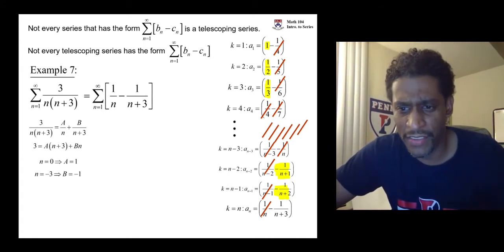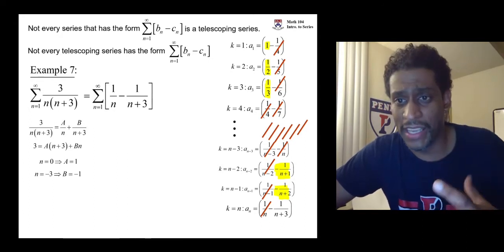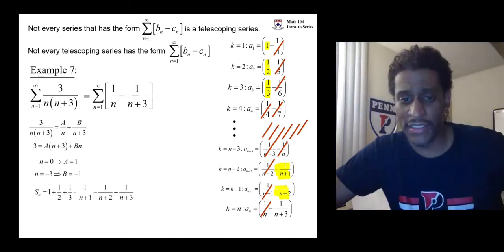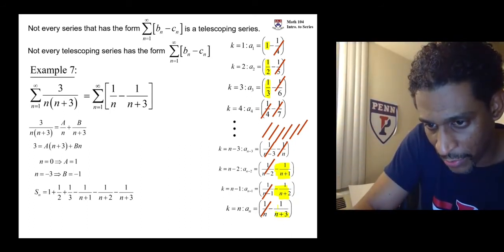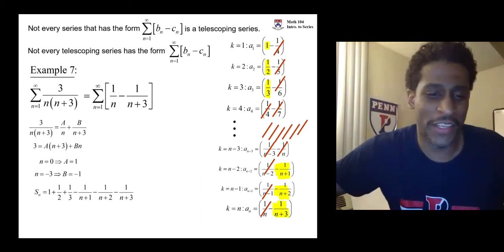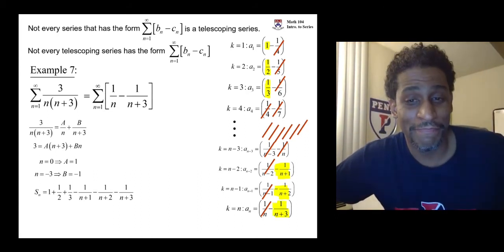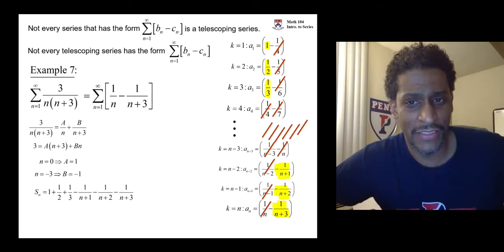Well we have three surviving terms at the end. When we go to write out what s sub n is, s sub n is these three terms from the beginning and the three terms from the end. Collapsing telescoping, three terms in the beginning, three terms in the end.